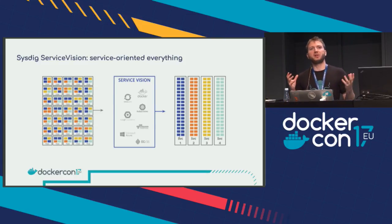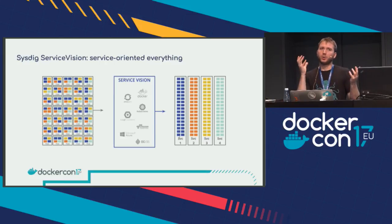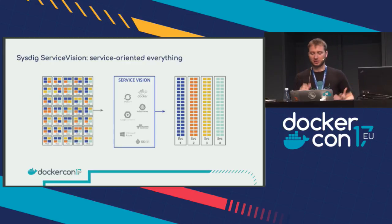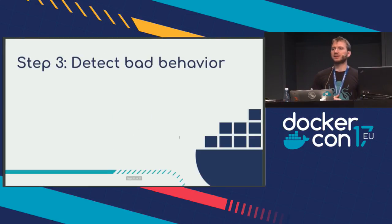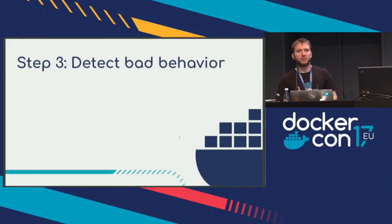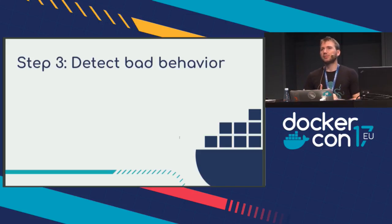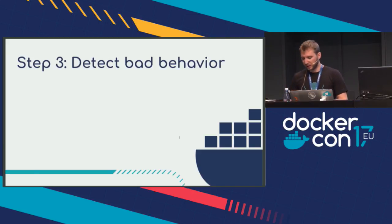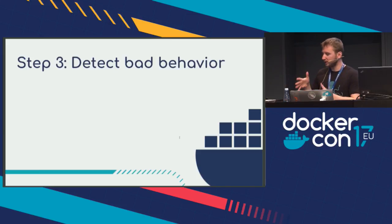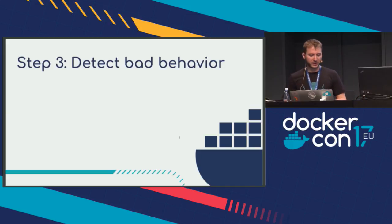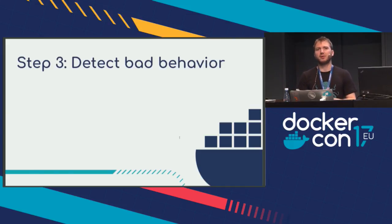Now we have two pieces: a way to observe things very deeply, and a way to identify the identity of the information we just observed. The third natural step — since we're talking about security — is to detect bad behavior. We have this huge stream of system calls, and buried in this stream is the knowledge of what is good and what is bad. We need a system to detect bad behavior based on that.